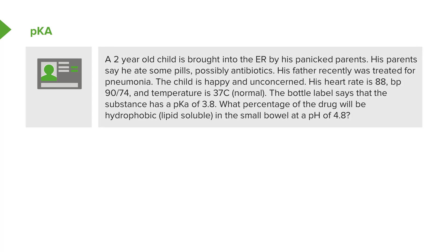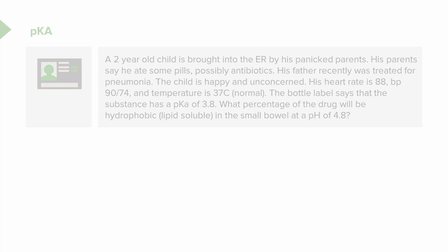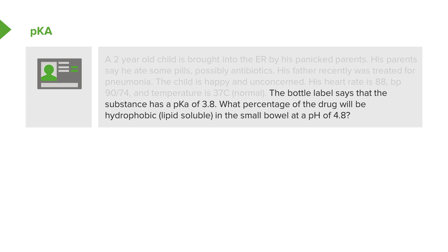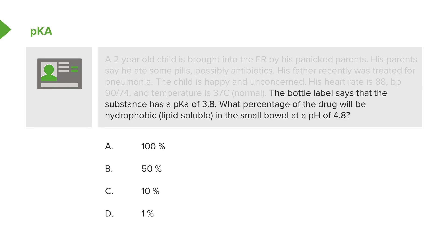A two-year-old is brought into the ER by his panicked parents. His parents said that he ate some pills, possibly antibiotics. His father blah blah blah blah — kind of gets boring. Let's look at the last two sentences of that question. The bottle label says that the substance has a pKa of 3.8. What percentage of the drug will be hydrophobic or lipid soluble in the small bowel at a pH of 4.8? If you think about it, this is a pH question — it's not about a clinical case. It's really about figuring out how to use pKa and pH to figure out the percentage of soluble ions. You don't need the rest of the STEM. This particular question shows that the STEM is really not relevant, and so this way you can come up with the answer. We're going to do the same question in the lectures, so have a look for it later.